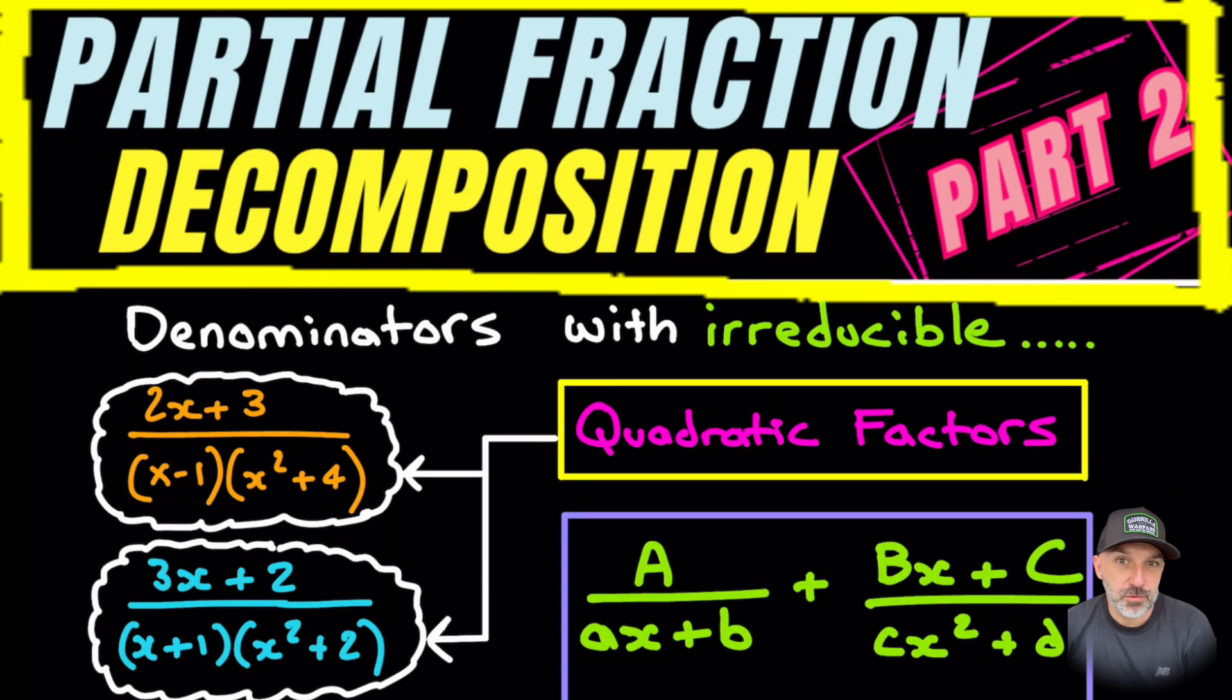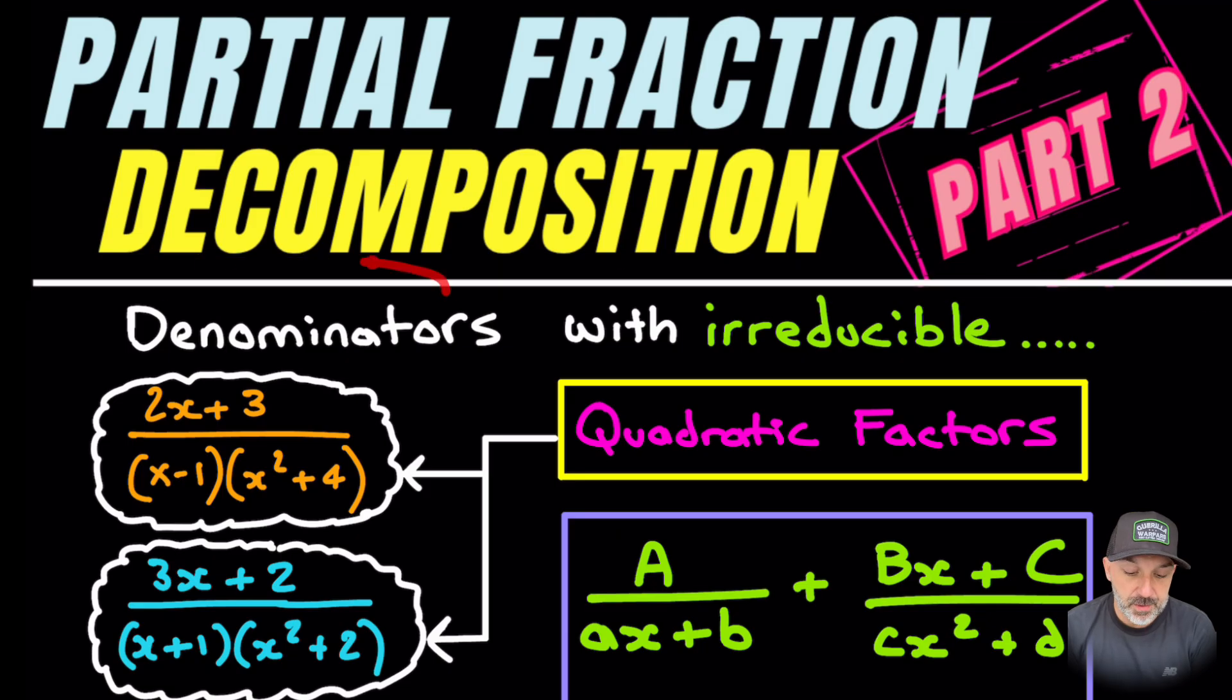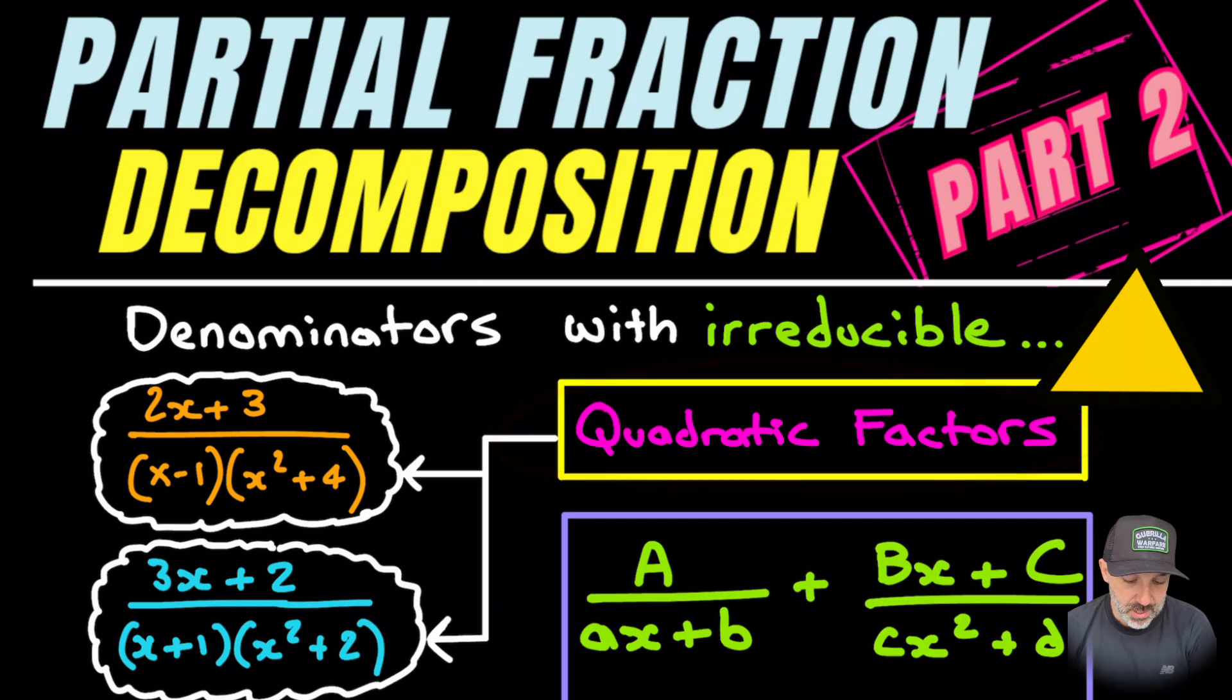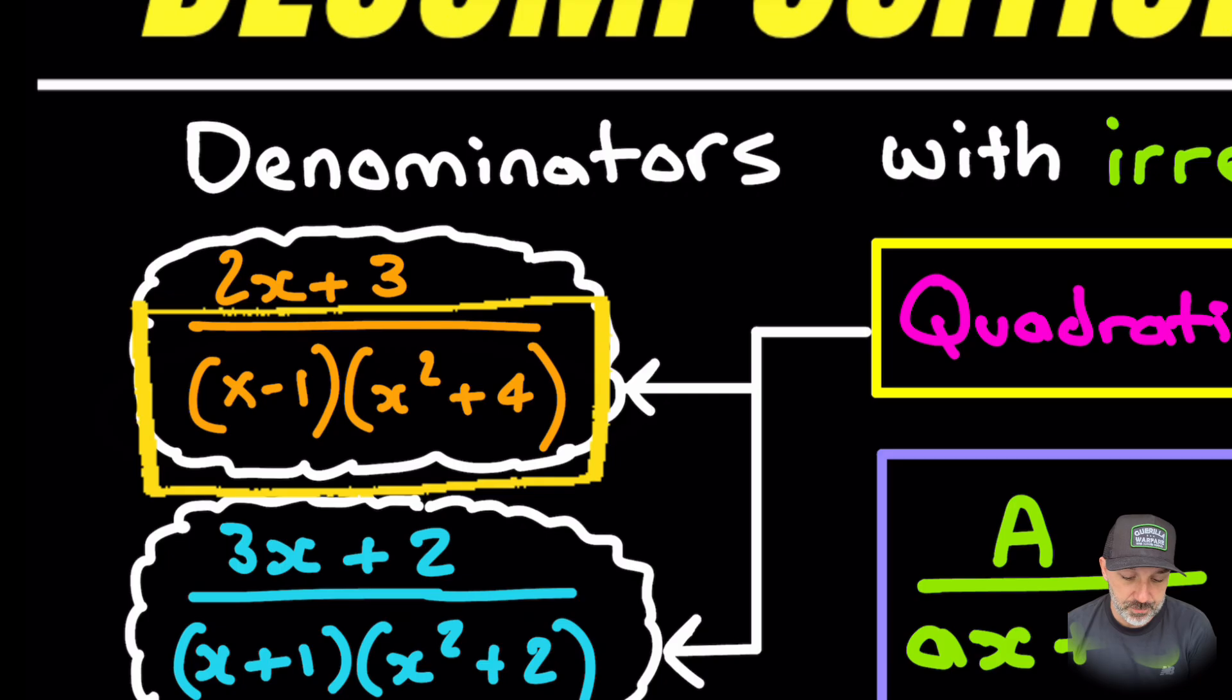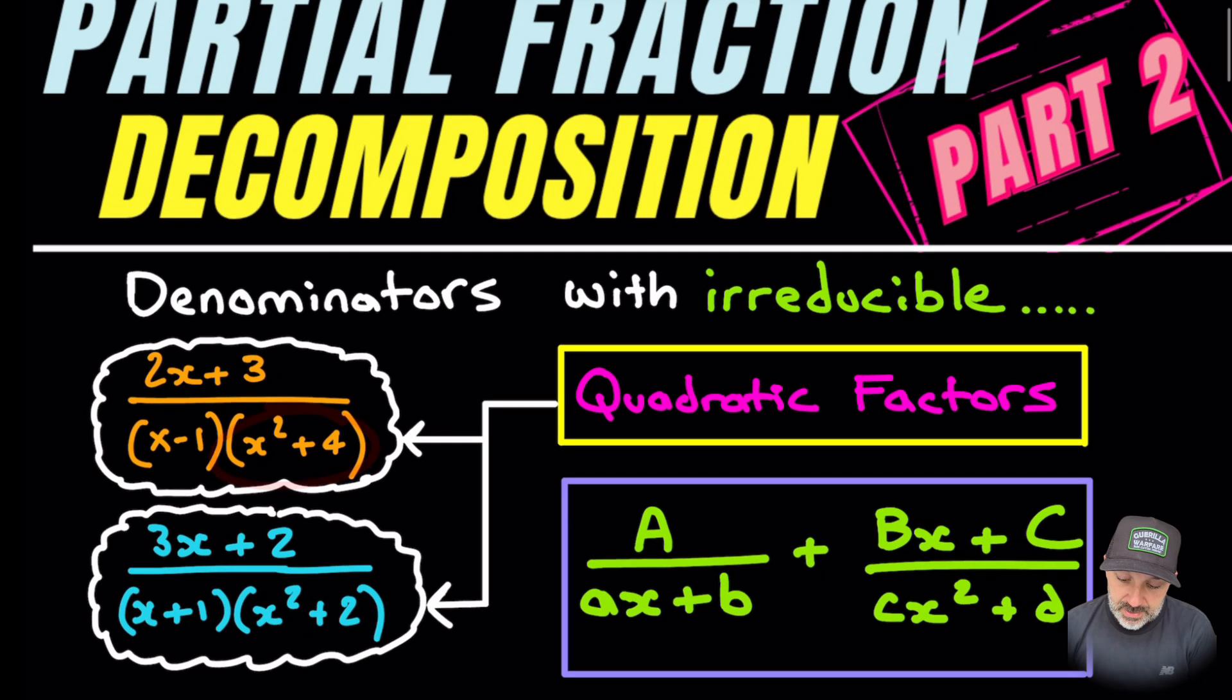This is part two of my partial fraction decomposition series. In this one we're going to look at when the denominators of these fractions are irreducible quadratic factors. In other words, we will not be able to break these down into linear factors, so we are dealing with a quadratic factor. We'll need to use a slightly different approach as we did to part one. Let's dive in.